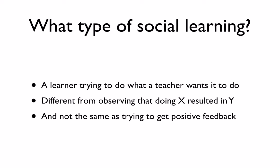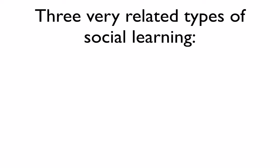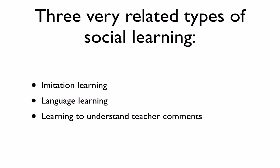This particular type of social learning is the subject of the thesis, and each experiment presented here will be an example of it. Three very related types of social learning will be focused on: imitation learning, language learning, and learning to understand teacher comments. These are not incompatible — language learning can be a form of imitation learning, and you can imitate a teacher and adopt their linguistic conventions. The talk has three parts, though there are no sharp boundaries and they are certainly not mutually exclusive.